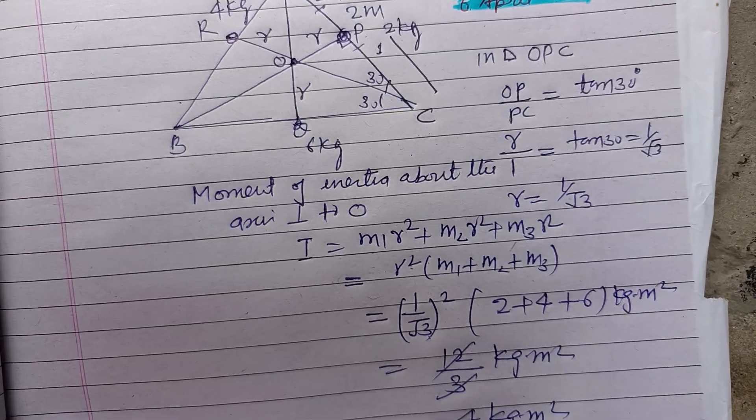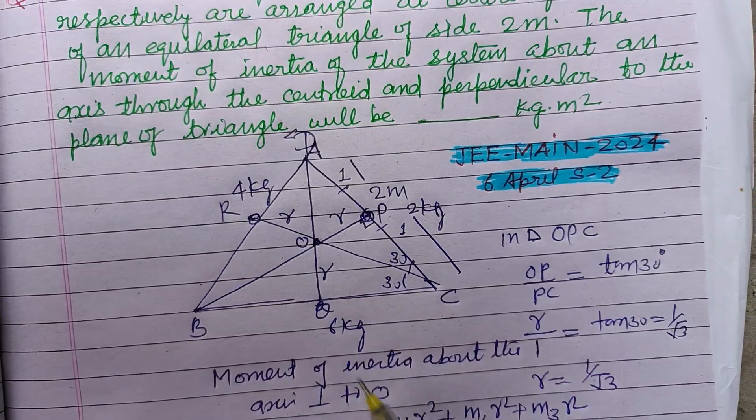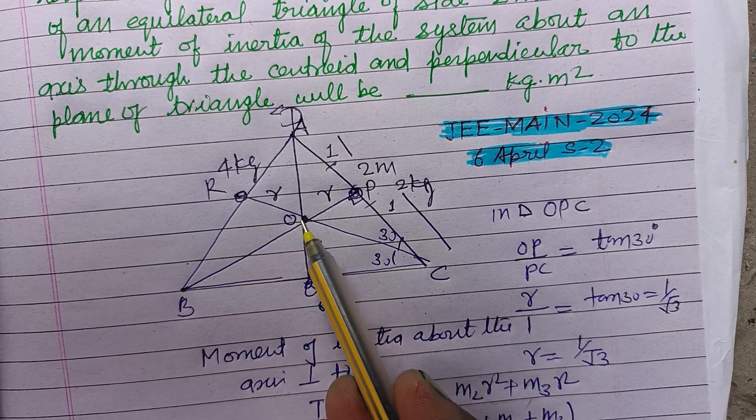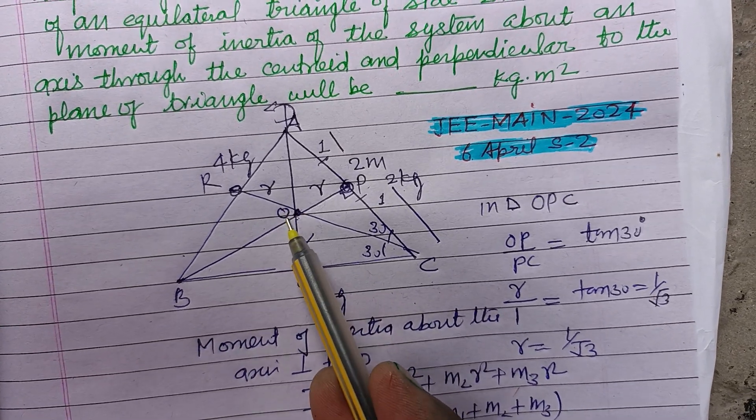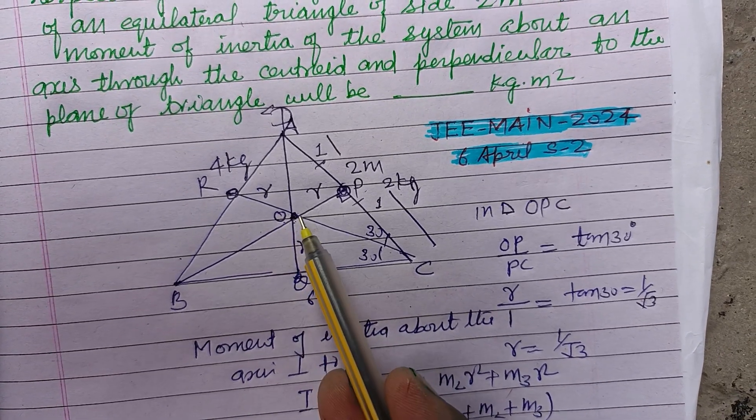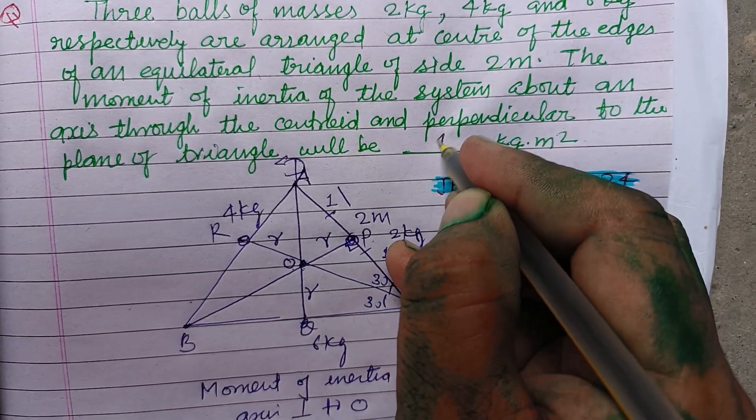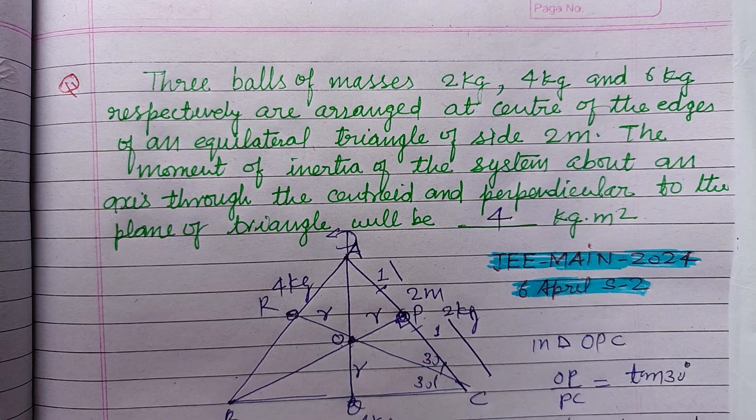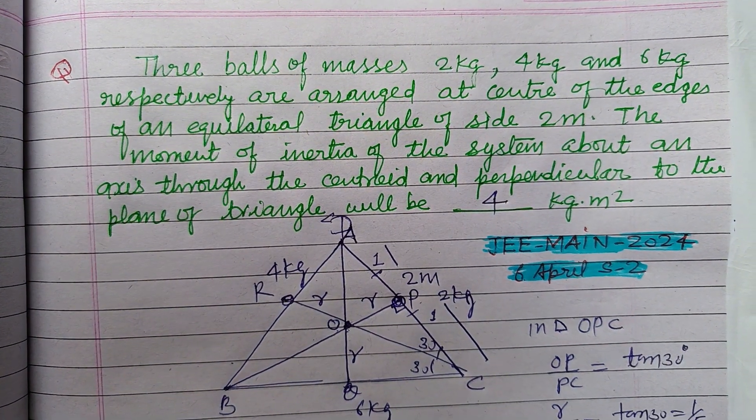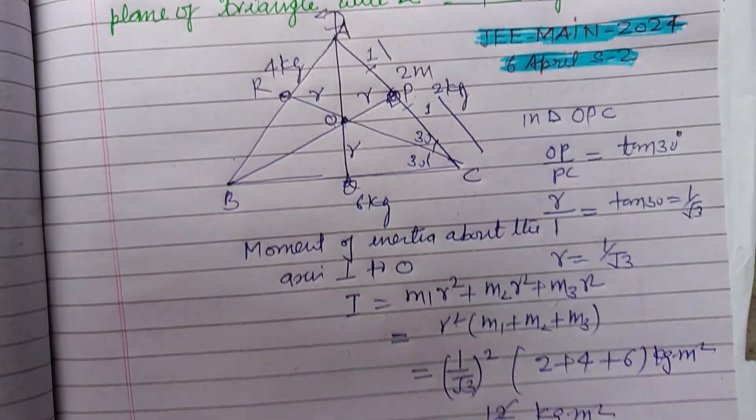This is the moment of inertia about this axis which is perpendicular to this center O in upward direction. So 4 is the correct answer of this question. I hope you got it, please like the video, subscribe the channel, thanks for watching.